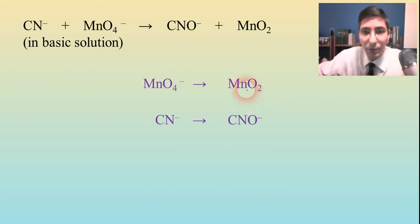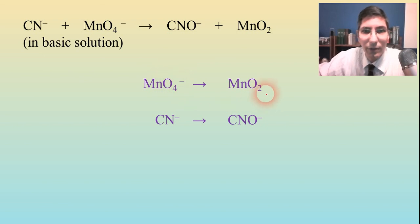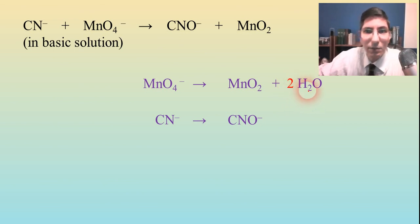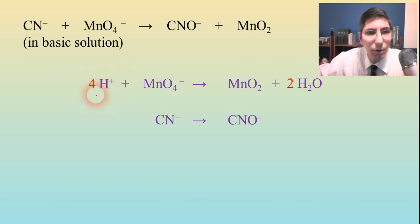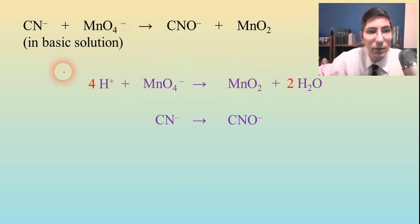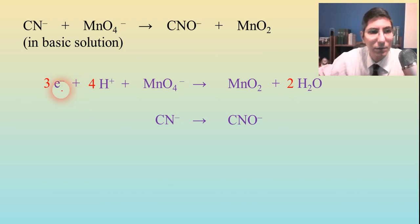For the first half reaction (permanganate to MnO₂): everything other than hydrogen and oxygen is already balanced. Balance the oxygens — I've got four on the left and two on the right, so I add two waters to the right side. That balances oxygens but creates four hydrogens, so I add four H⁺ to the left side. Now look at the charge: positive four from H⁺ and negative one from permanganate gives positive three on the left. There's zero charge on the right. So I add three electrons to the left side to balance. This is a reduction since we're gaining electrons.